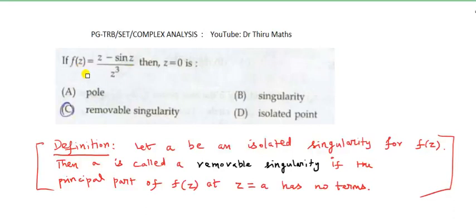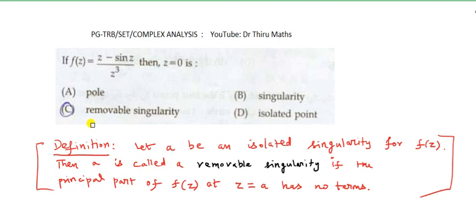If f of z is equal to z minus sin z divided by z cube, then z equal to 0 is what? For the best option, we will select the definition of removable singularity.